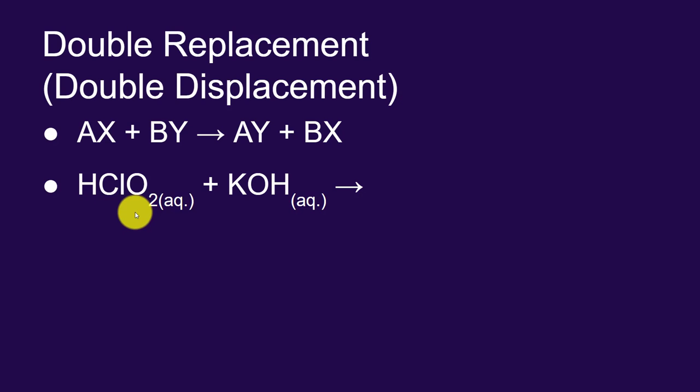And I'm going to react that with potassium hydroxide. Again, I have two sets of partners dancing. I've got the hydrogen ion and the chlorite ion, and the potassium ion and the hydroxide ion. When they swap, the hydrogen is going to start dancing with the hydroxide, and the potassium is going to start dancing with the chlorite.